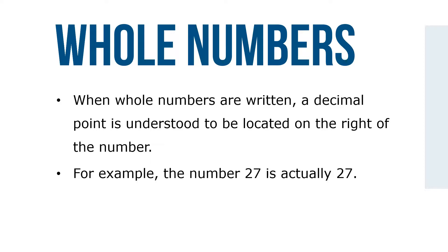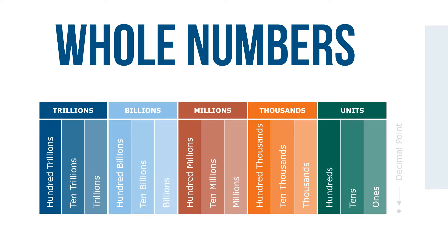When whole numbers are written, a decimal point is understood to be located at the right of the number. For example, the number 27 is actually 27 point. This figure illustrates the 15 places and 5 groups of the decimal number system. Note that our system is made up of groups of three places, separated by commas, each with its own name. Whole numbers start at the understood decimal point and increase in value from right to left.